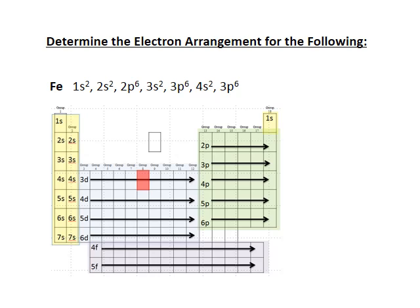Using the noble gas shorthand for iron: the previous noble gas is argon, so the abbreviated electron configuration is [Ar] 4s² 3d⁶.